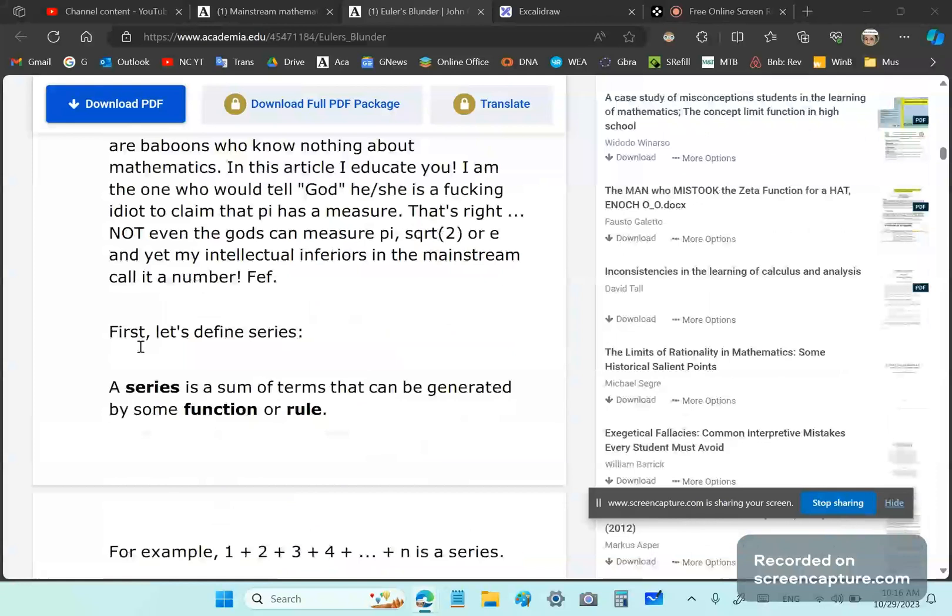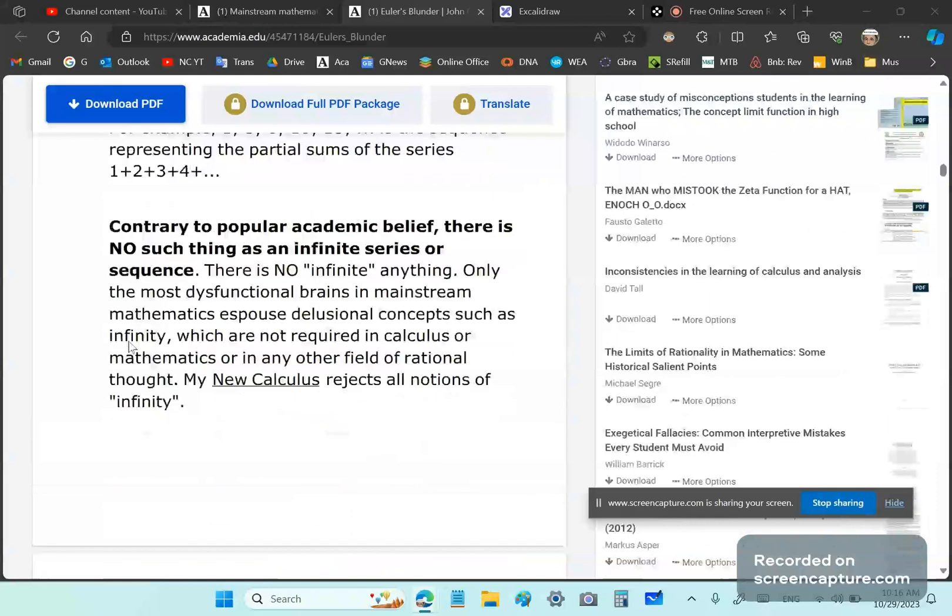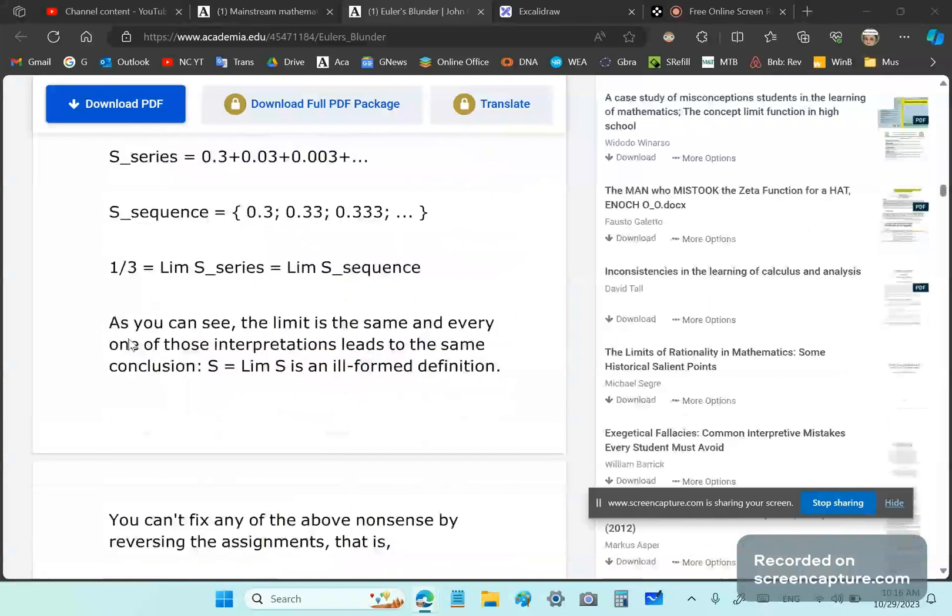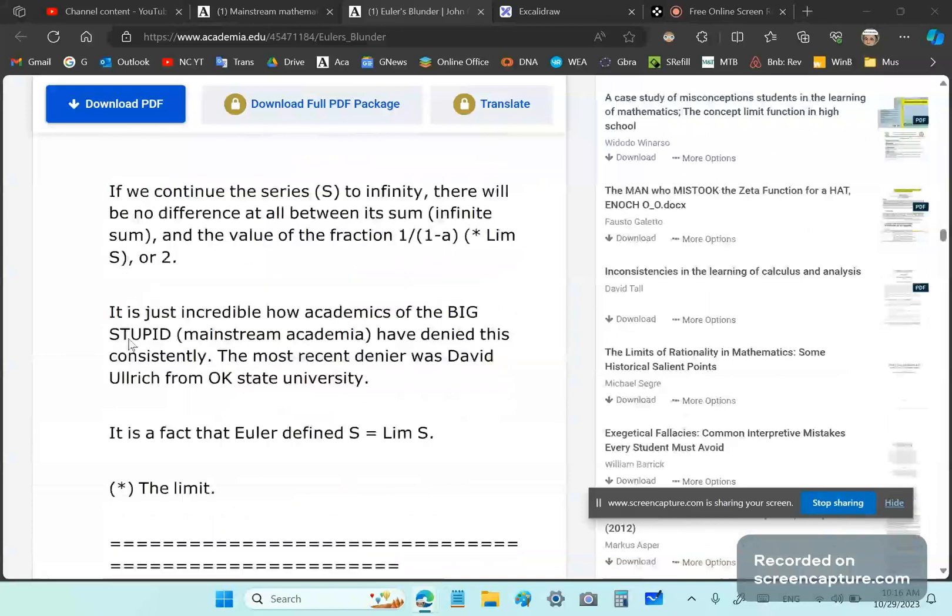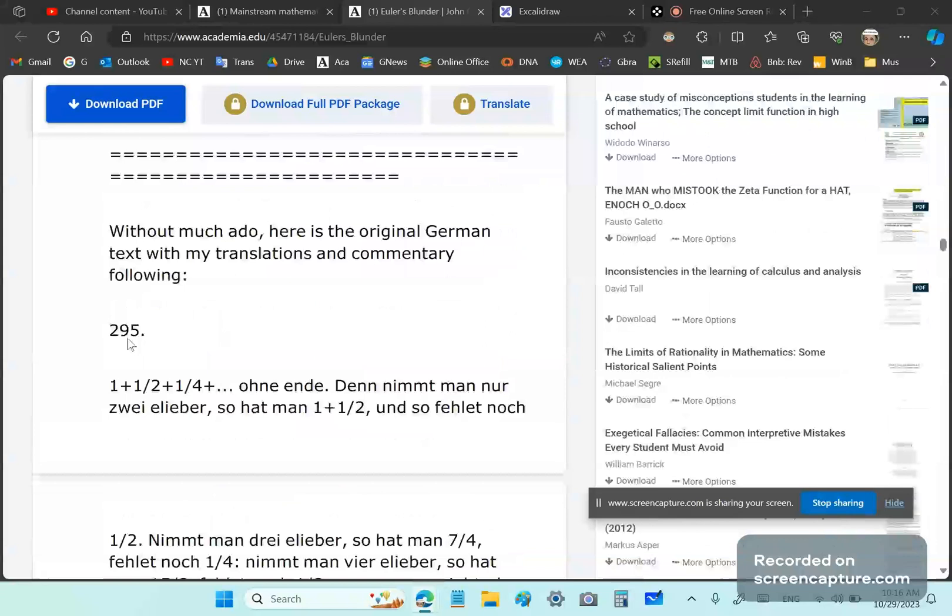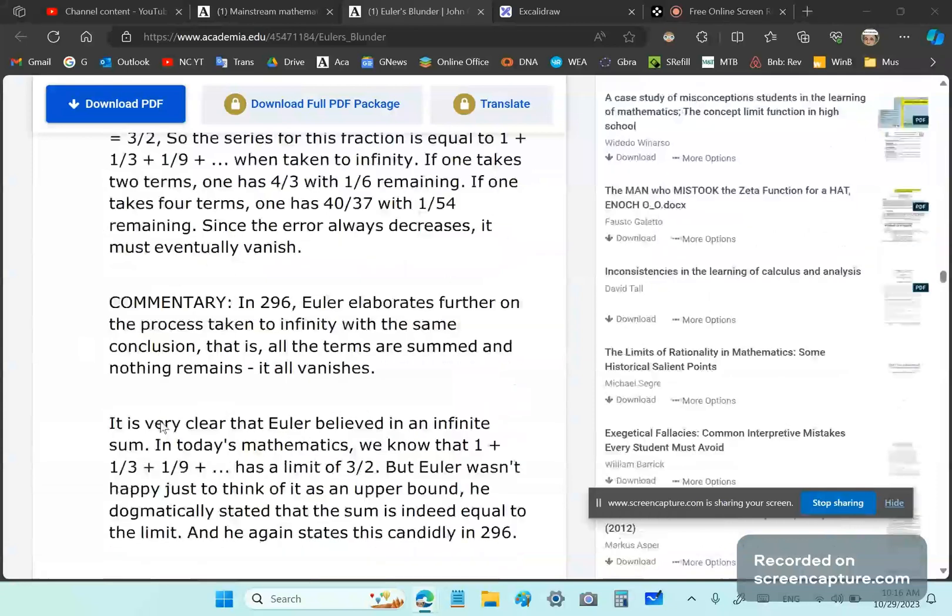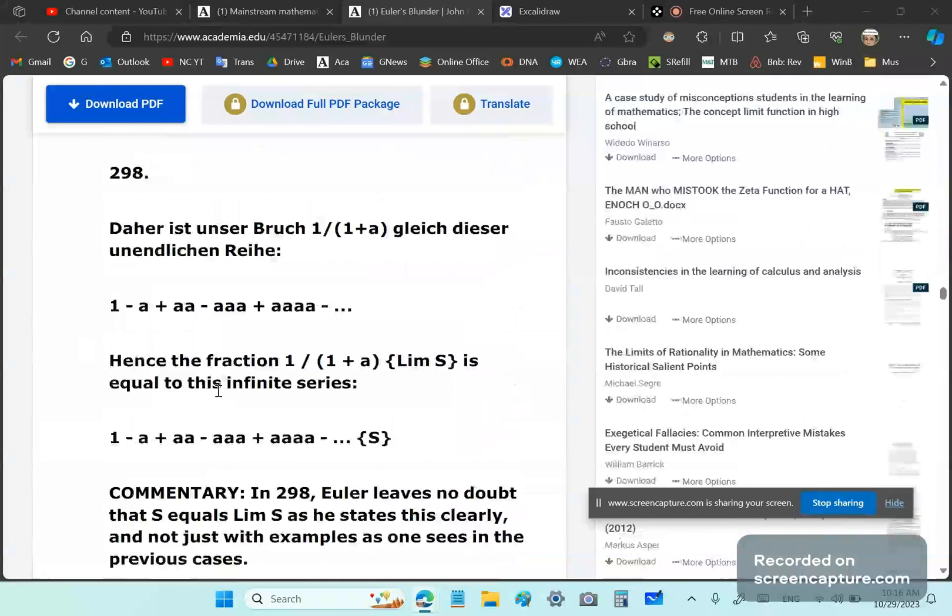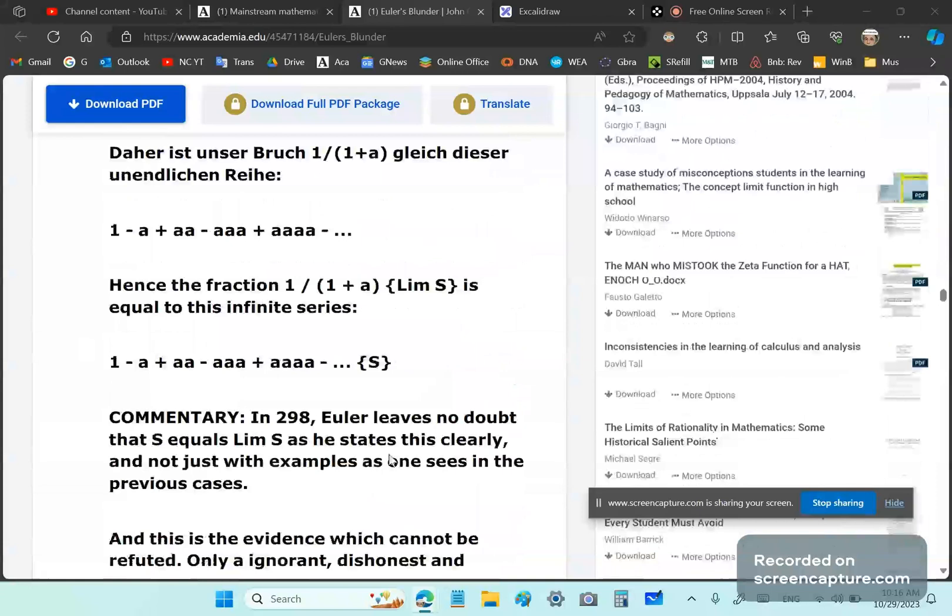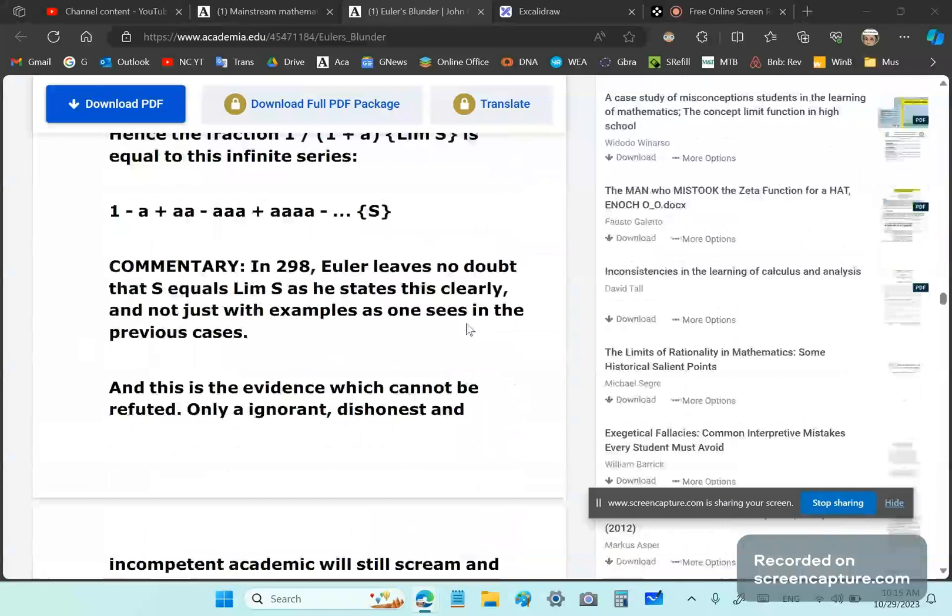So this article to which I place a link has the original German in it and explains all the intricacies around this. Showing you that whatever conclusion you reach from reading the German itself, you'll see that what I'm telling you is exactly what Euler believed. So Euler says in paragraph 298 exactly what I read out to you earlier, hence the fraction is equal to this infinite series. And again in 298, Euler leaves no doubt that S equals lim S as he states this clearly and not just with examples as one sees in the previous cases.